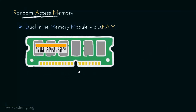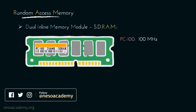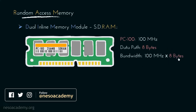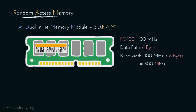Let me illustrate how we can decode a DIMM-SDRAM label. On this label, PC100 is written, which implies that this particular SDRAM operates at 100 MHz frequency. Since SDRAMs have 8 bytes of data path, the bandwidth of this RAM can be calculated as 100 MHz multiplied by 8 bytes, which gives us 800 MB per second. So this SDRAM can store 256 MB and operates at a bandwidth of 800 MB per second.